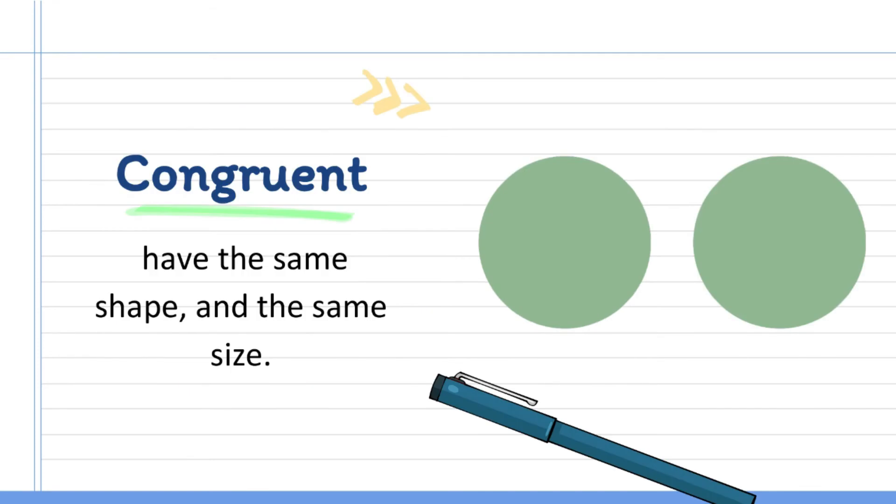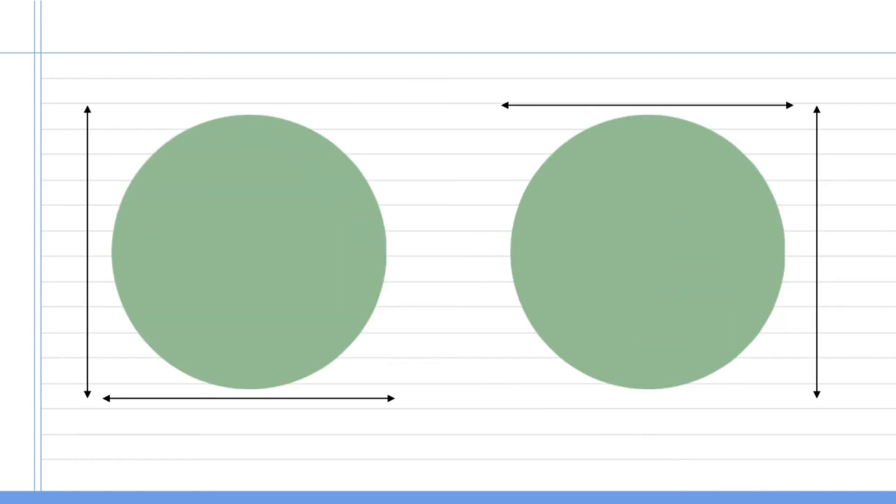Now let us move on to the other term, congruent. Congruent is like similar but this time it has the same shape and the same size. If we have two congruent circles, it will look like this. They will have the same size and the same shape.